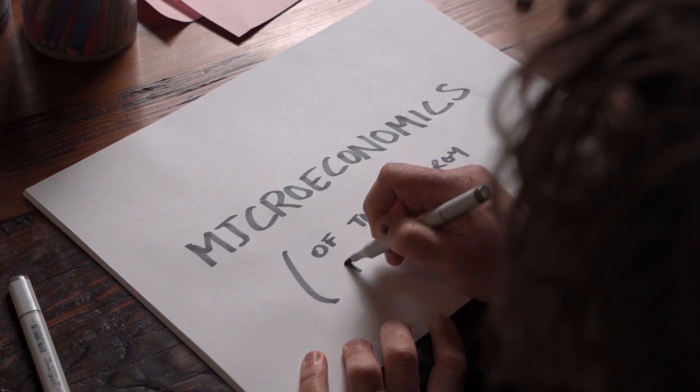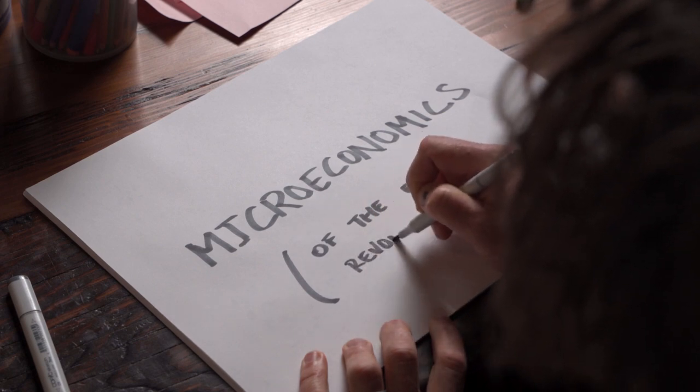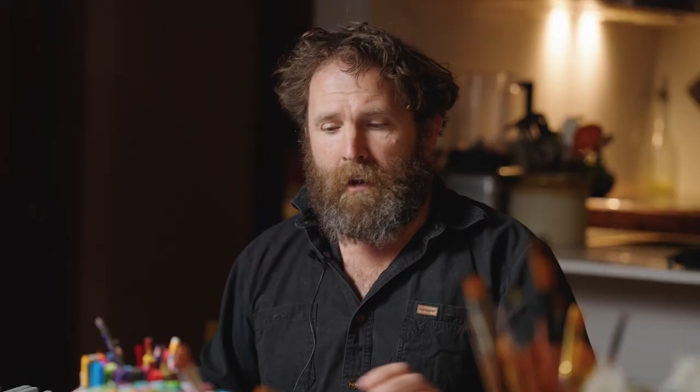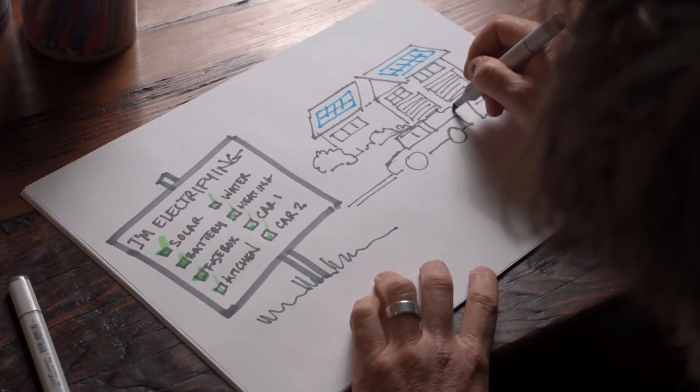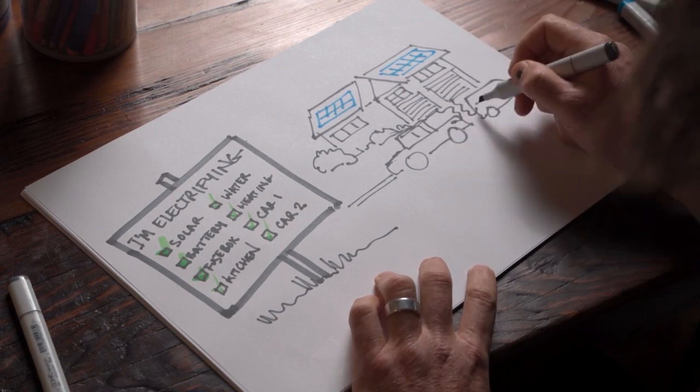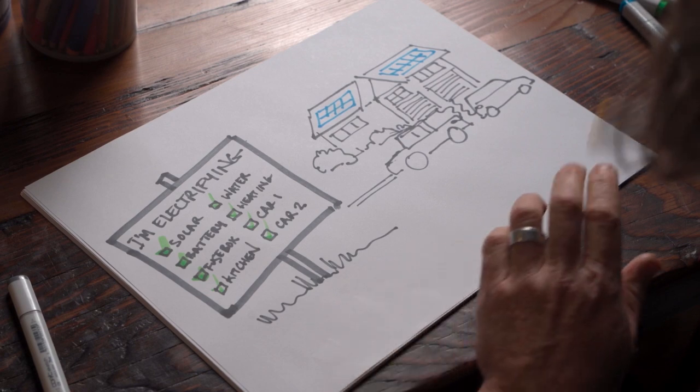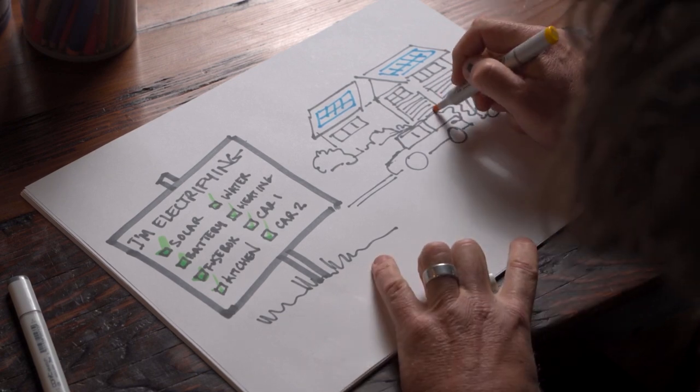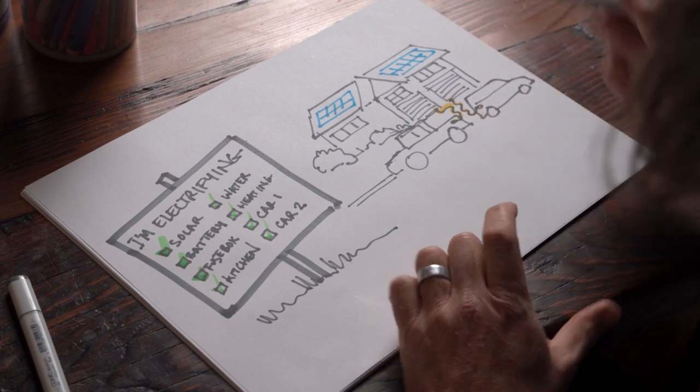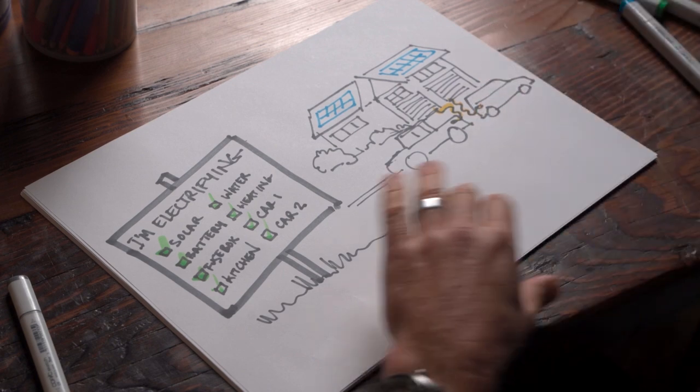But let's turn not from the macroeconomic story, which I think is good, but let me talk about the underlying microeconomics, which I think is the most compelling reason of all to do this. Here's your house, here's your cars, and this is what we're all going to be doing. We're going to be electrifying because the economics just makes sense for your house. We're going to put solar on the roof, then we're going to follow it with a battery, we'll electrify the load center or the fuse box, the kitchen, the water heater, the heating, the first car, the second car.